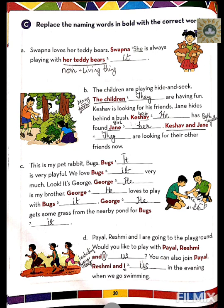Number two: The children are playing hide and seek. For 'the children,' since you are not among them, we use 'they.' They are having fun. Keshav is looking for his friend Jane, who hides behind a bush. Keshav is a boy, so 'he.' Jane is a girl, so 'her.' Keshav and Jane — they are looking for their other friends.